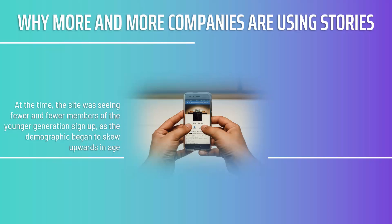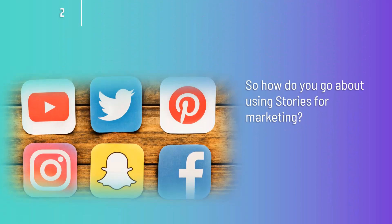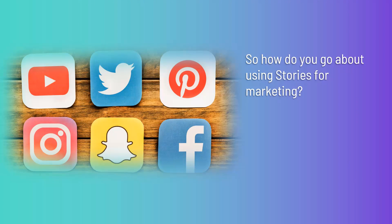At the time, Facebook was seeing fewer and fewer members of the younger generation sign up as the demographic began to skew upward in age. Meanwhile, Snapchat was enjoying a lot of success, particularly among younger users — it provided a way for kids to share messages in a very immediate and fun manner that couldn't be held for posterity. Facebook had to adapt or risk becoming obsolete, and as marketers we need to do the same.